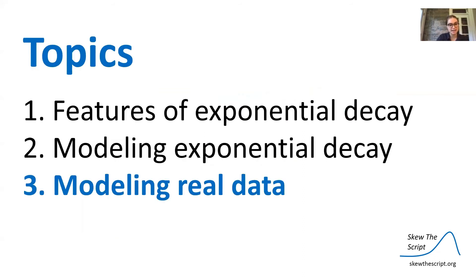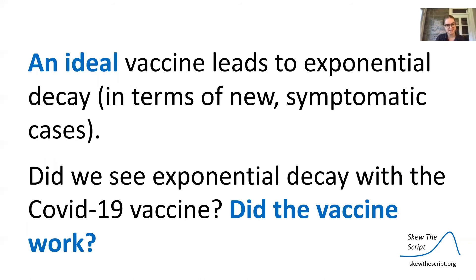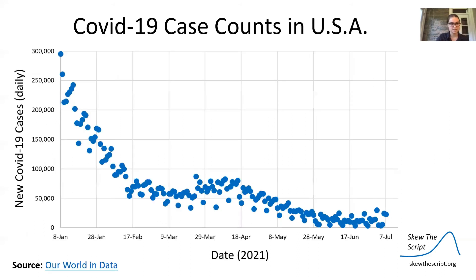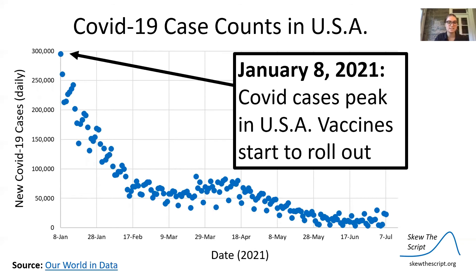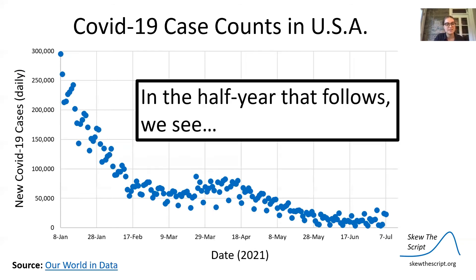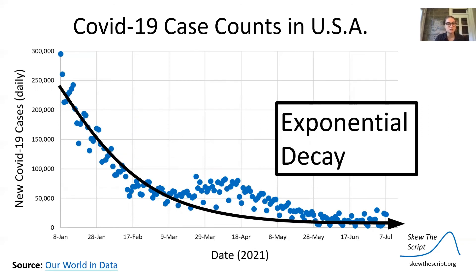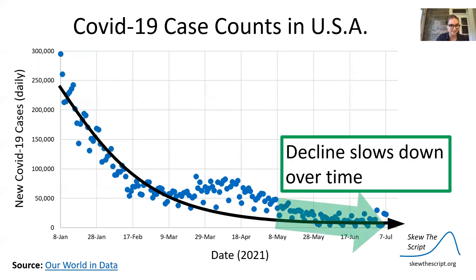Now let's turn to modeling real data. On January 8, 2021, new COVID-19 cases in the United States peaked. Around the same time, the country started administering vaccines in larger numbers. An ideal vaccine leads to exponential decay — did we see that? Looking at the graph of COVID-19 case counts, after vaccines rolled out we do see exponential decay over the following six months: a fast decline at first, then slowing down over time.